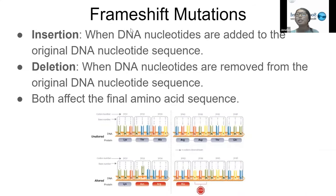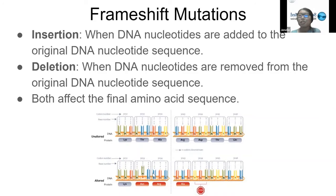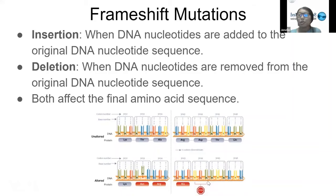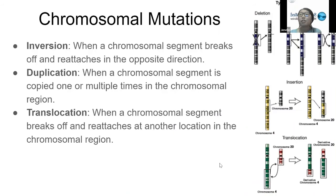There are also frameshift mutations: insertions, when DNA nucleotides are added to the original DNA nucleotide sequence, and deletions, when DNA nucleotides are removed from the original DNA nucleotide sequence. Both of these affect the final amino acid sequence because they change how the amino acids are eventually translated from the mRNA. Many times, frameshift mutations cause a stop codon that cuts the protein short, which tends to be a very common effect.